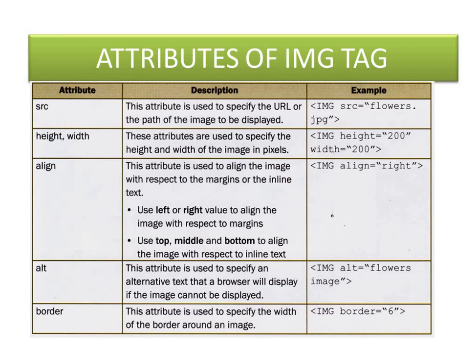Border — this is used to specify the width of the border around an image. img border equal to 6 will display a border of 6 pixels. So the different attributes of image tags are: src to specify the file name; height and width to specify the height and width of the image; align to align it towards the margin — it could be left, right, top, middle, or bottom; alt — used to specify alternative text that a browser will display if the image cannot be displayed; and border — used to specify the width of the border around an image.